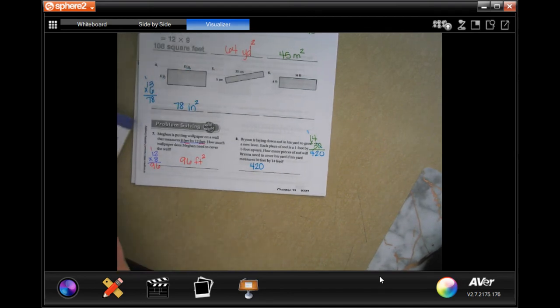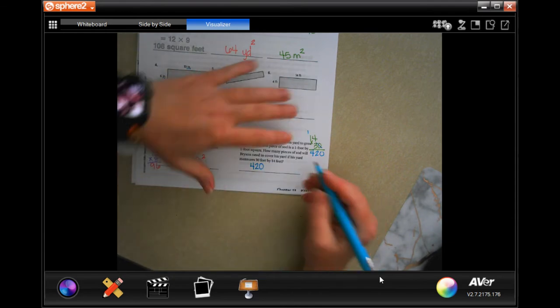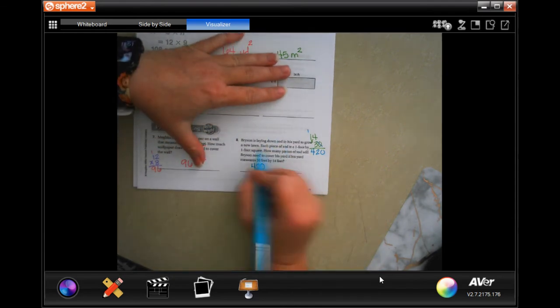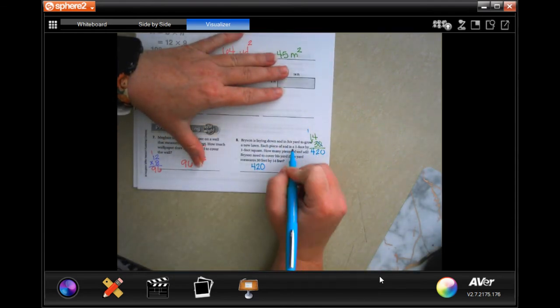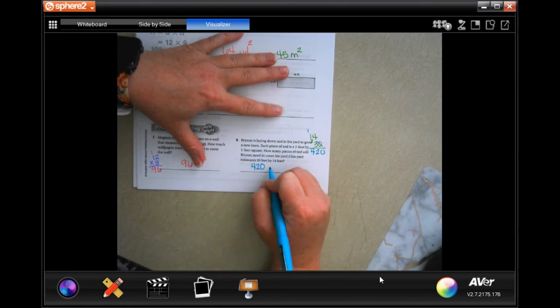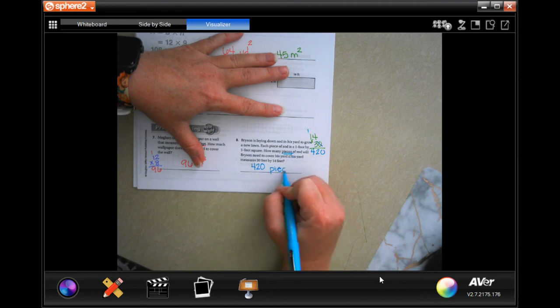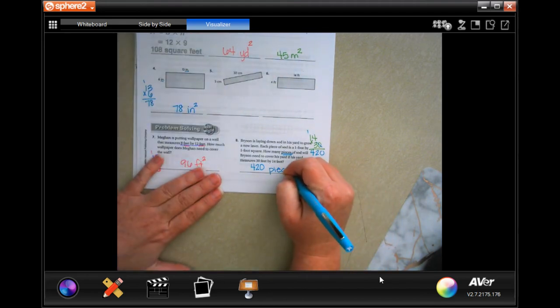Four hundred and twenty, sorry, I didn't find my page in my book. Okay, so four hundred and twenty pieces, because that's the square footage, and each is one foot by one foot. So, it says, how many pieces? How about that?